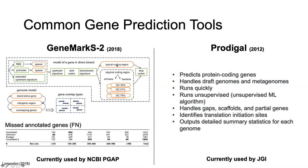GeneMarkS2 also has a component that allows it to look for atypical coding regions — organisms that may use different codons for amino acids, or have different features instead of a ribosome binding site before their start codon. It makes decisions as it predicts proteins. It also tries to resolve overlapping open reading frames, with intrinsic properties that determine which is the more likely candidate for your protein.